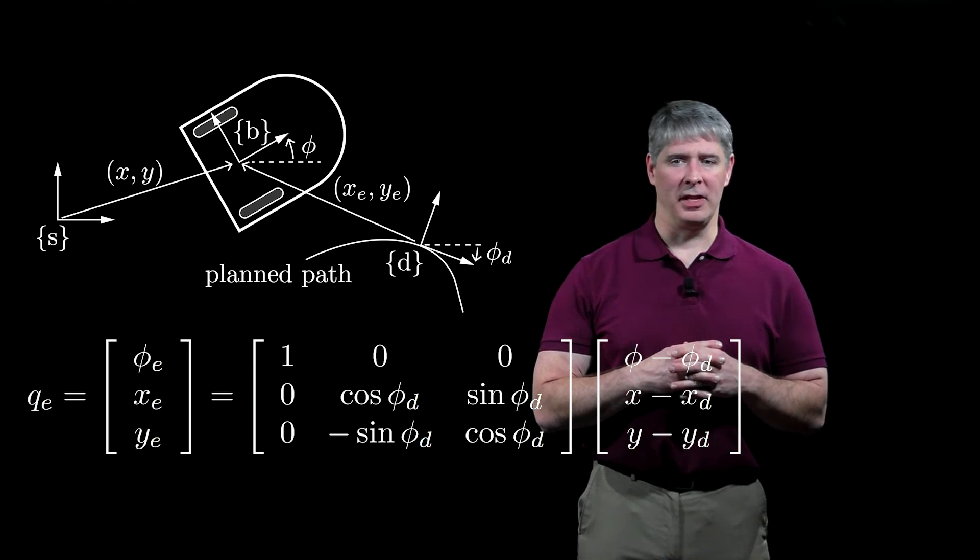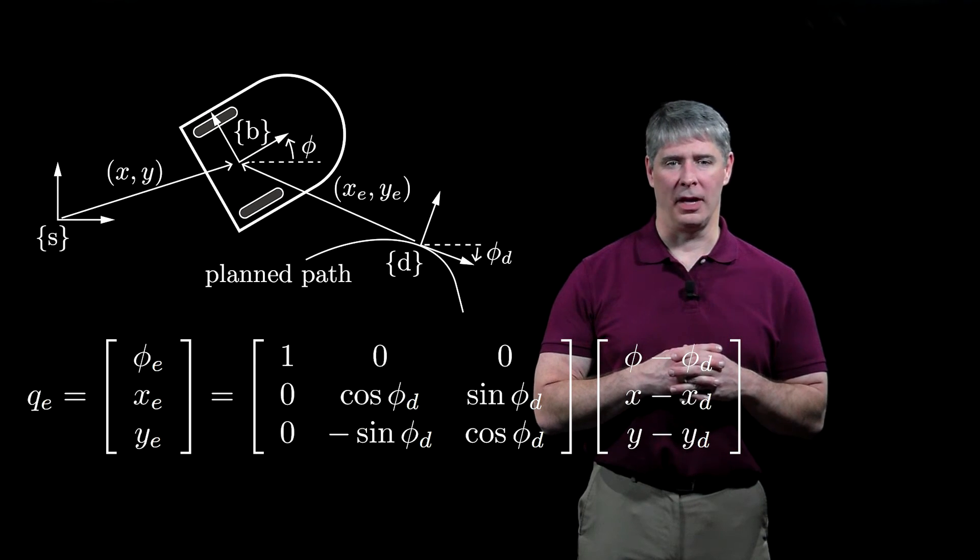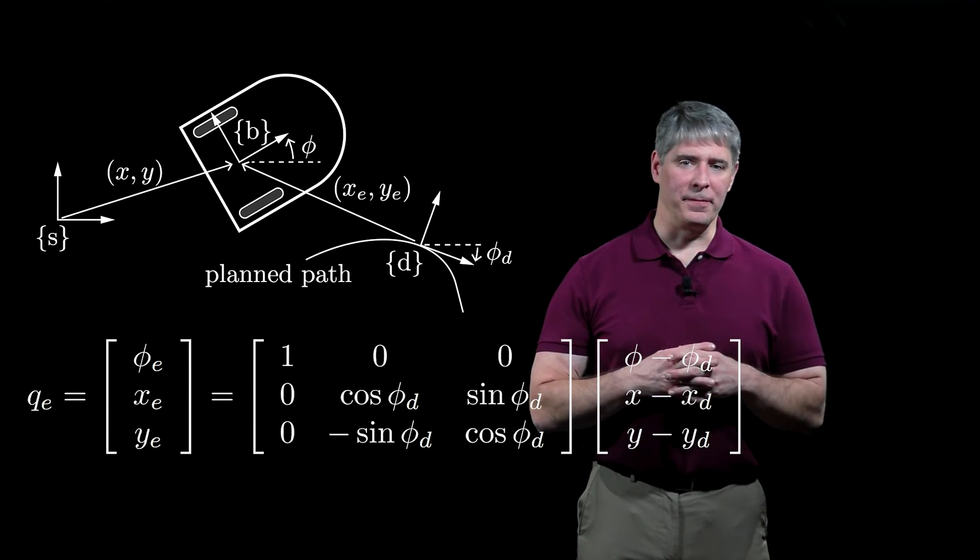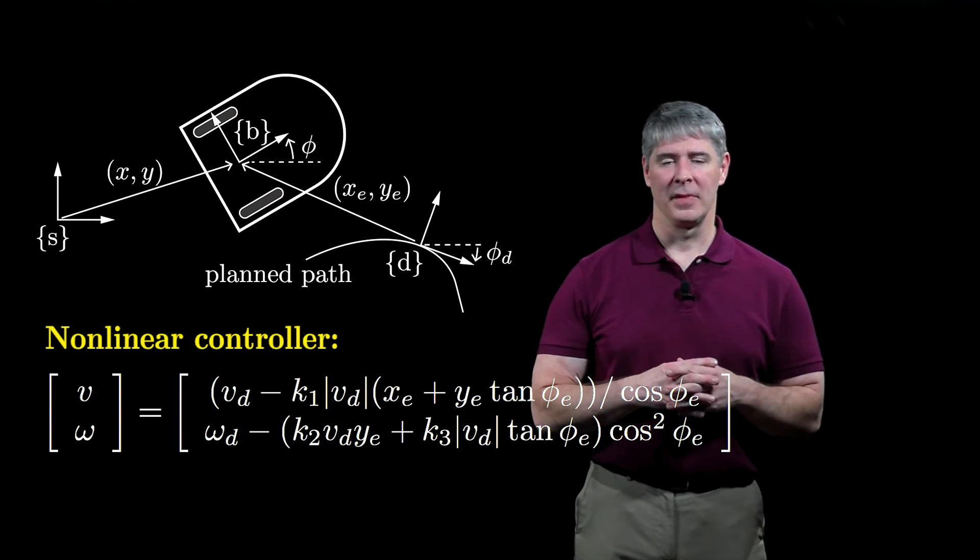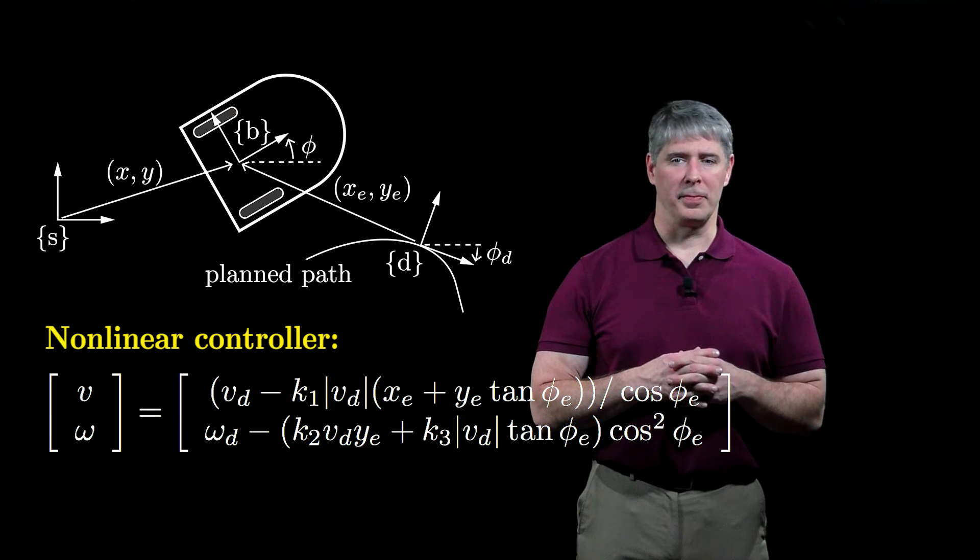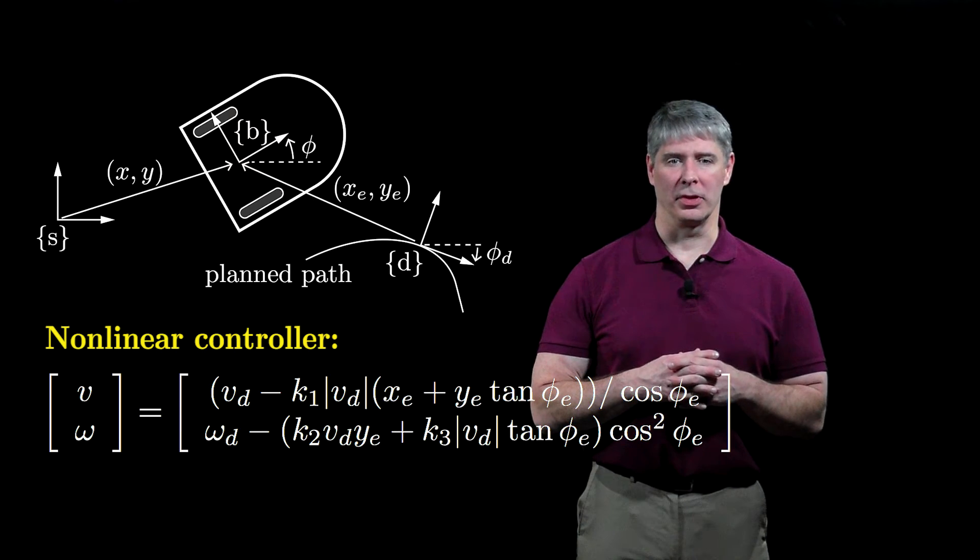With these error coordinates, we have a number of potential choices for the control law. One example is the feedforward plus feedback nonlinear controller shown here. It's called a nonlinear controller because it's nonlinear in the error coordinates.